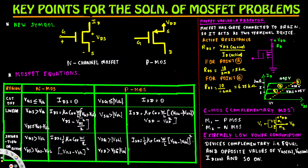MOSFET acts as a variable resistor. In the given circuit, the gate is connected to the drain, so it acts as a two-terminal device. The active resistance can be calculated using: RDS = VDS_active / ID_active. For point A, 15V divided by 3 mA gives a drain resistance of 5 kΩ. For point B, 10V divided by 1.6 mA gives 6.25 kΩ.